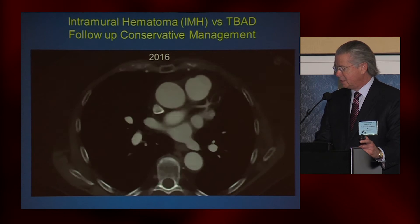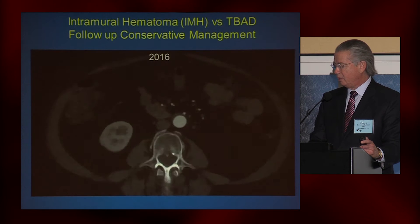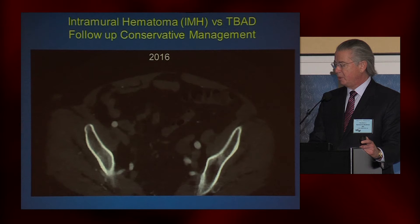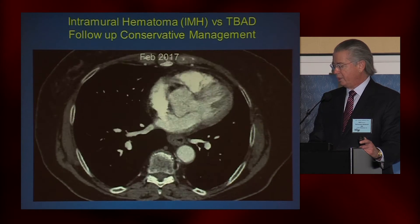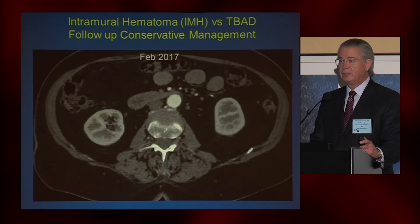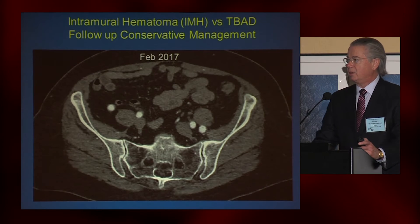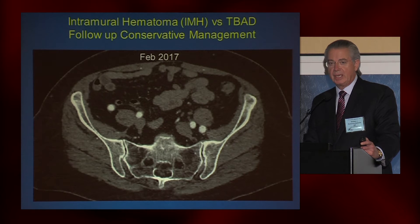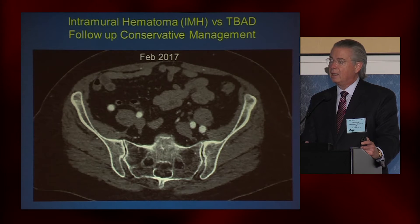Here's the same patient in 2016, showing just a small area of intramural hematoma but with the aorta completely healed. And just a couple of months ago, the aorta was completely normal. Interestingly, on that final CT scan I told her the aorta was completely healed, but it turned out the same CT scan revealed pulmonary emboli — from which she was also asymptomatic.